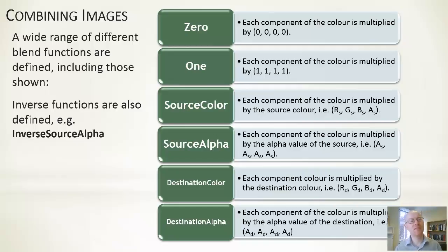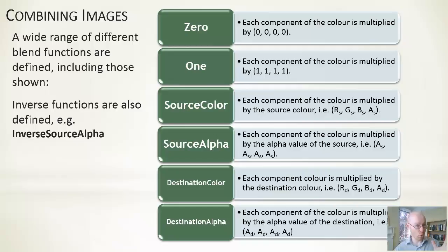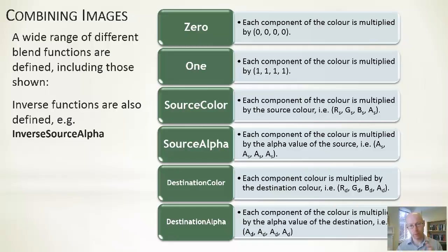Inverse functions are also defined — inverse source alpha, inverse source colour, and so on. The way to think about an inverse function is that it equals 1 minus the normal function. So for source alpha: if the alpha value is 0.2 and the blend function is source alpha, we multiply by 0.2. If using inverse source alpha, we multiply by 1 minus 0.2, which is 0.8.